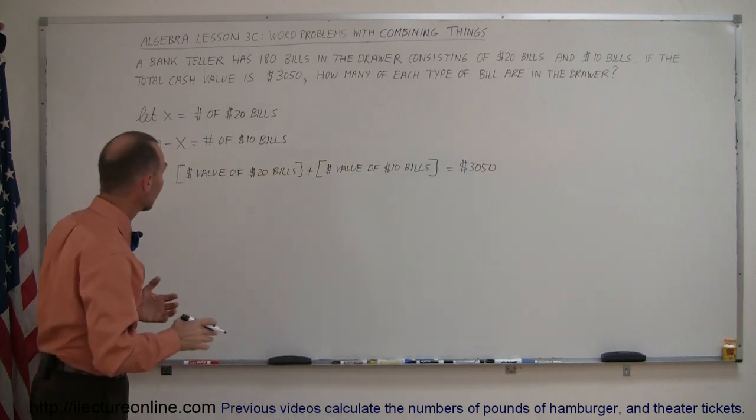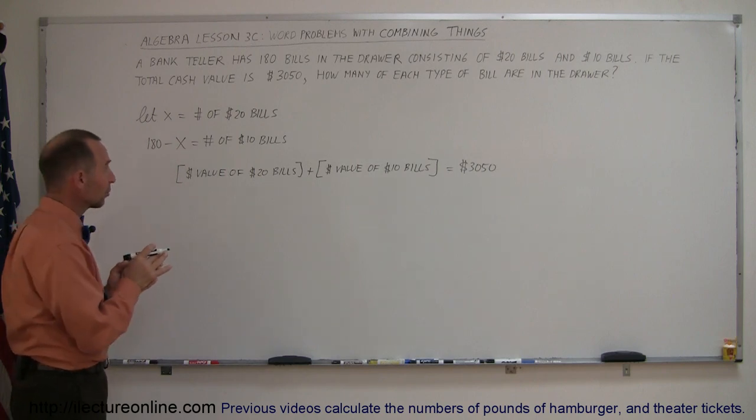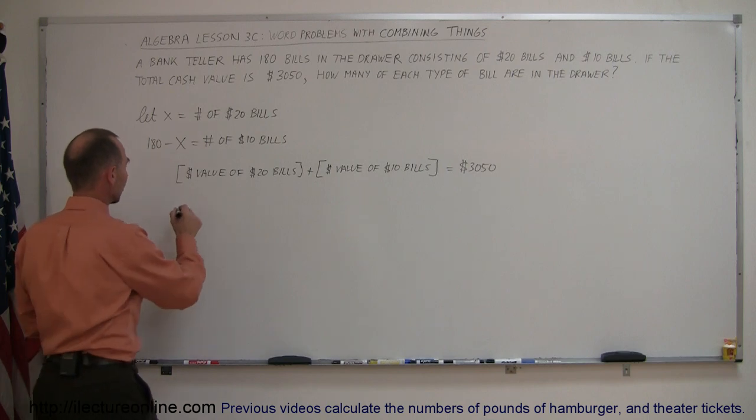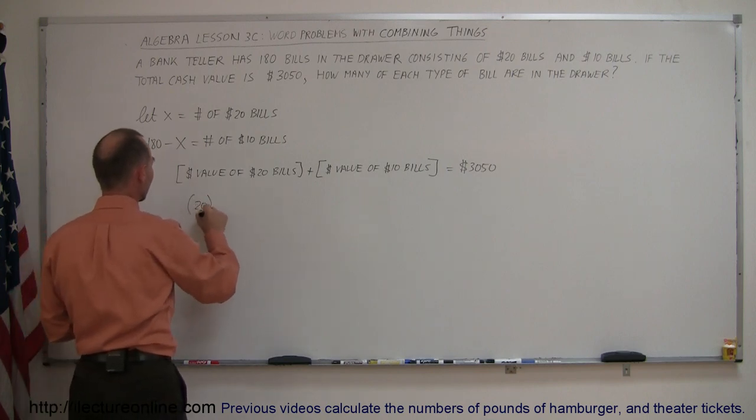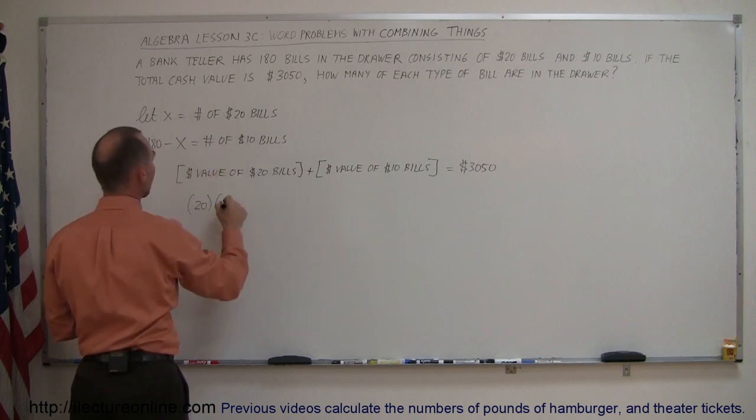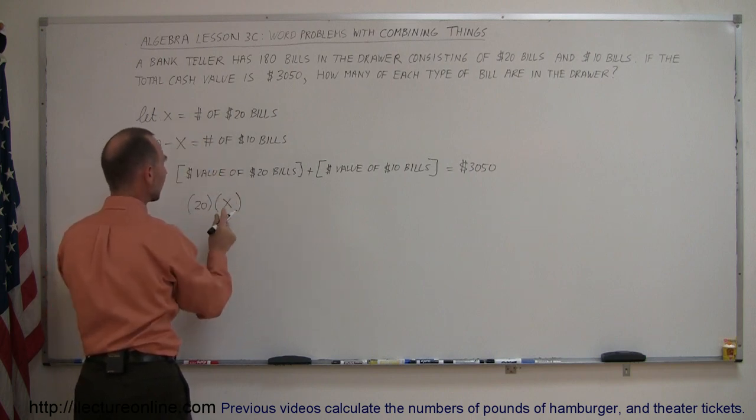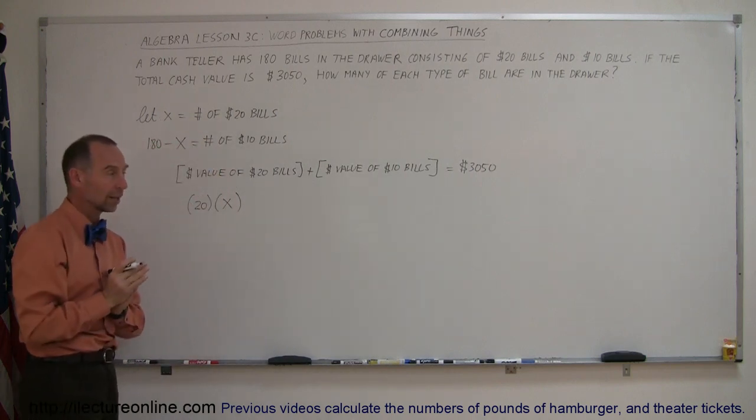So how do we find the value of the $20 bills? Well, we take the value of each bill and we multiply it times the total number of bills. So that means that $20, which is the value for each bill, times the number of bills, and we have x of them, so x times 20 will give you the total value of the $20 bills.